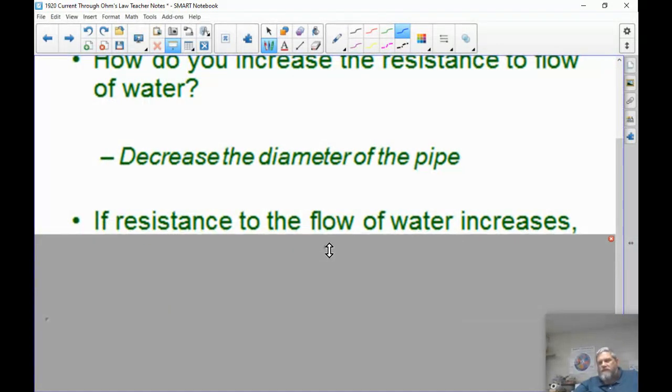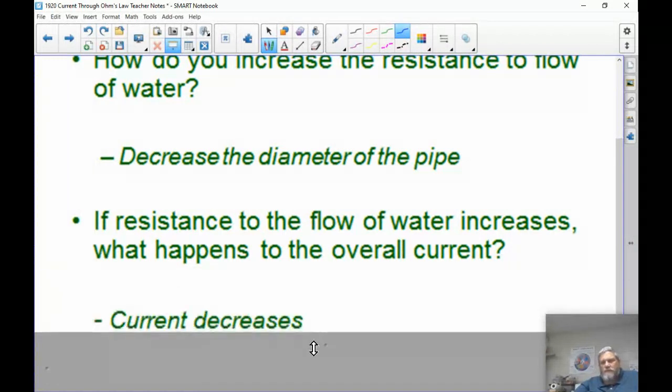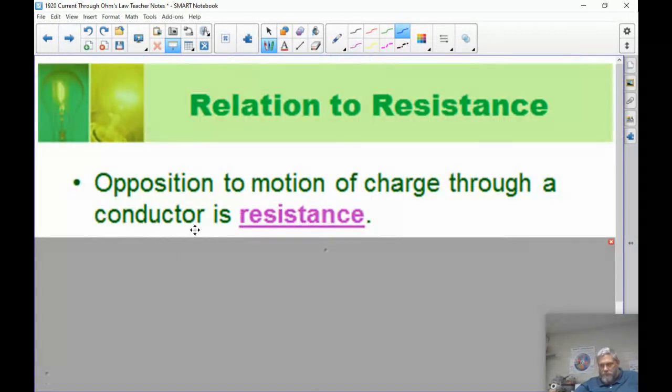If the resistance to the flow of water increases, what happens to the overall current? What happens to the amount of water that flows? It goes down. So you increase resistance, current goes down. That's an inverse relationship.